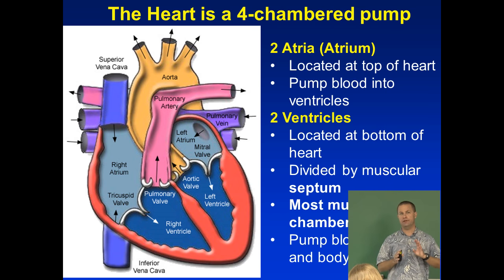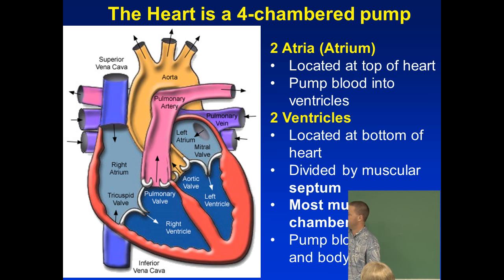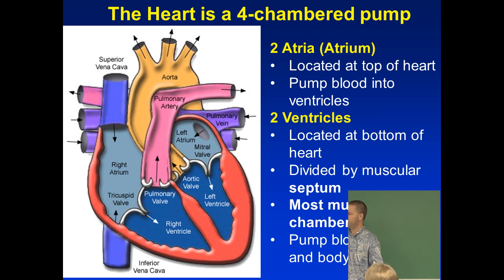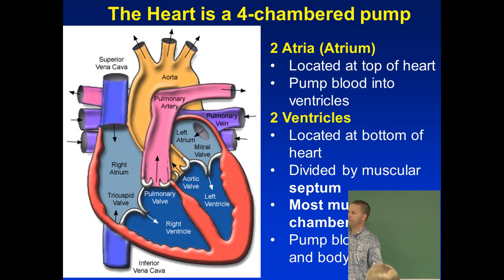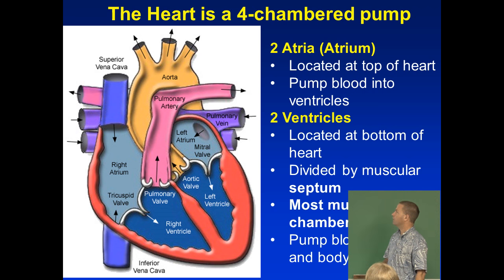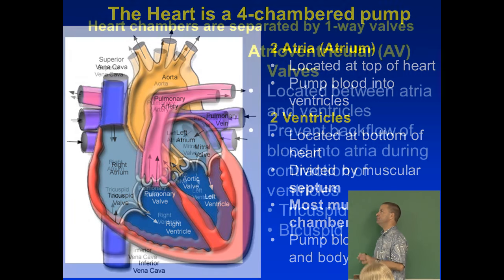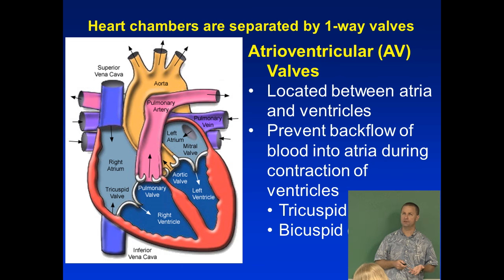The ventricles have more work to do than the atria. The atria simply collect blood — the right atrium collects blood returning to the heart — then squeeze it into the ventricle. The ventricles do much more: the right ventricle pumps to the lungs, and the left ventricle pumps to the systemic circuit, which is everywhere else in the body. So the ventricles must be very muscular.